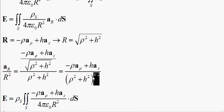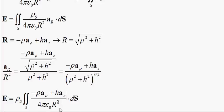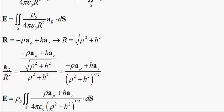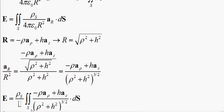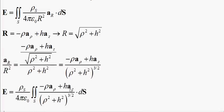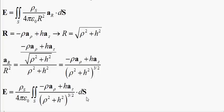We already got the top part in. Plugging this in, we can factor out 4 pi epsilon zero because those are all constants. Now we have this dot ds here — we're going to take care of that in a second.